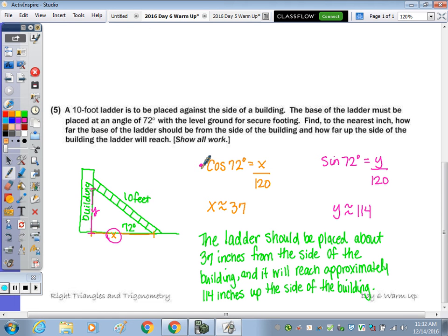And then next, how far up the side of the building the ladder will reach, that's y. And to find that, we use the sine ratio. So the ladder should be placed about 37 inches from the side of the building, and it will reach approximately 114 inches up the side of the building.